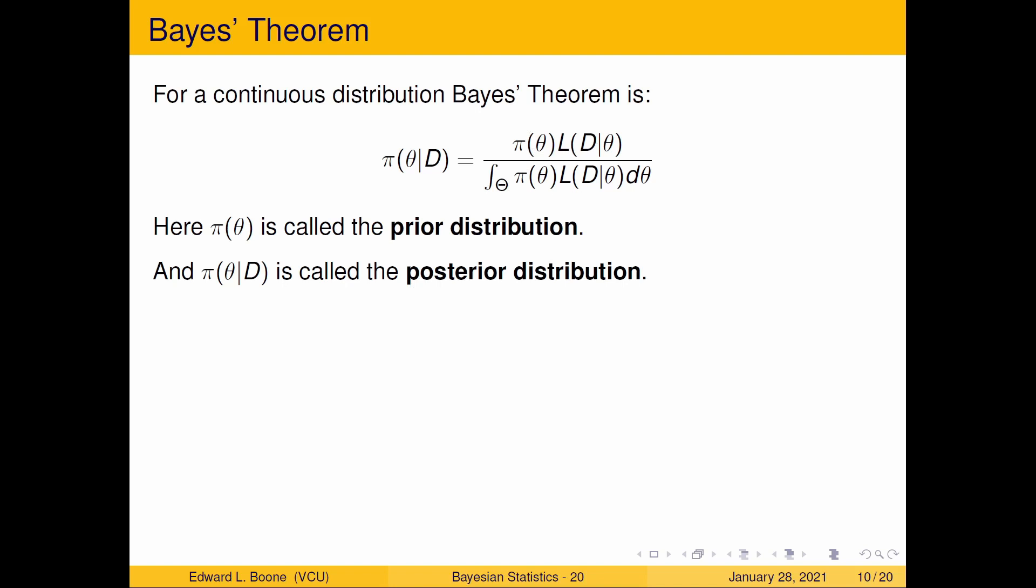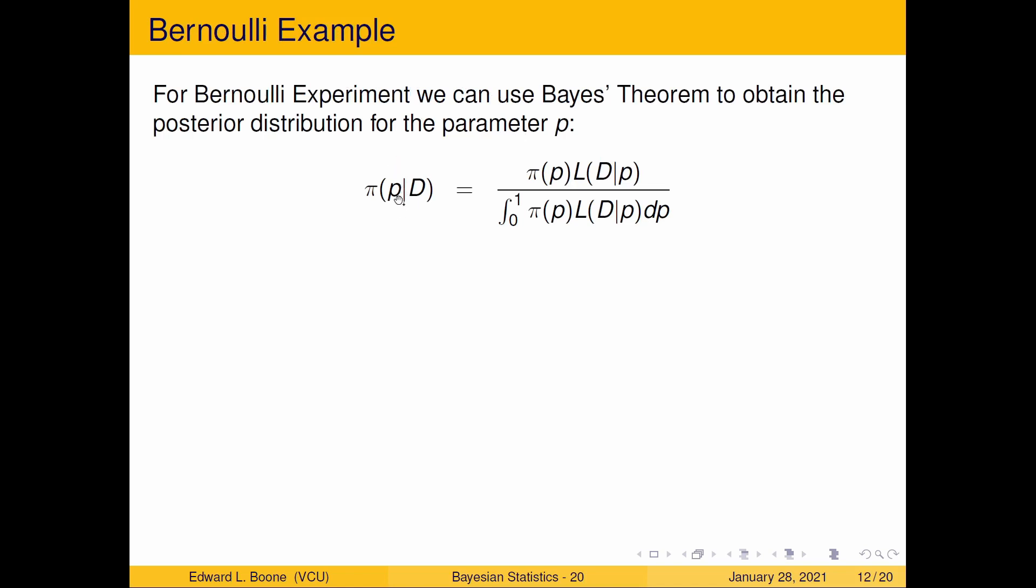Let's find out what the posterior distribution should be for this particular experiment. Because we have all the pieces, right? We have the likelihood on a previous slide, and we have the prior distribution on a previous slide. I'm going to swap everything over. I'm going to take θ out and put p in, because that's the parameter we're looking for.